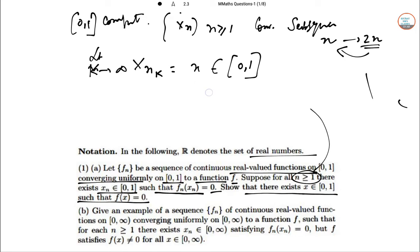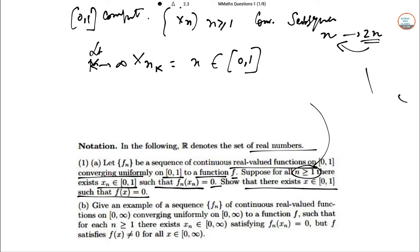So the function F is continuous since it is uniform limit of the continuous functions.